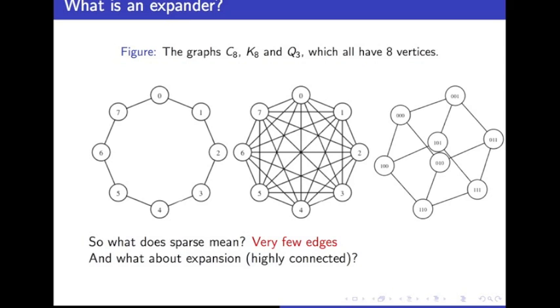What does expansion mean? We're taking a very strong connectivity property here. We want to require that for any subset of the vertices A, comprising, say, no more than half of the vertices, we take its boundary partial A, then that boundary is relatively large. It has to be at least epsilon times the size of the set A that we're starting with.